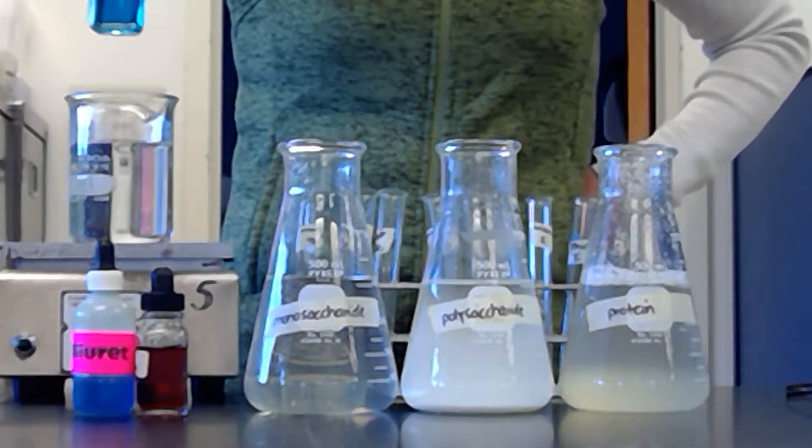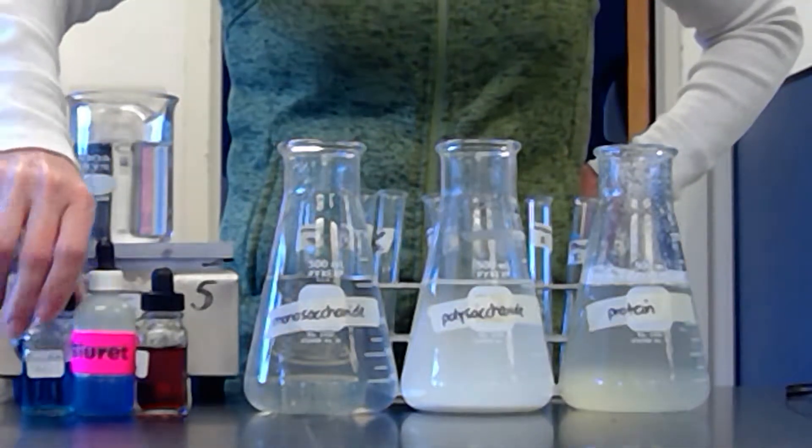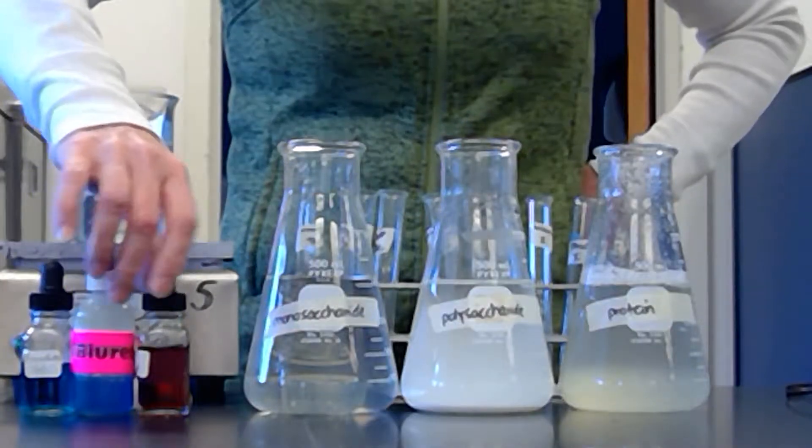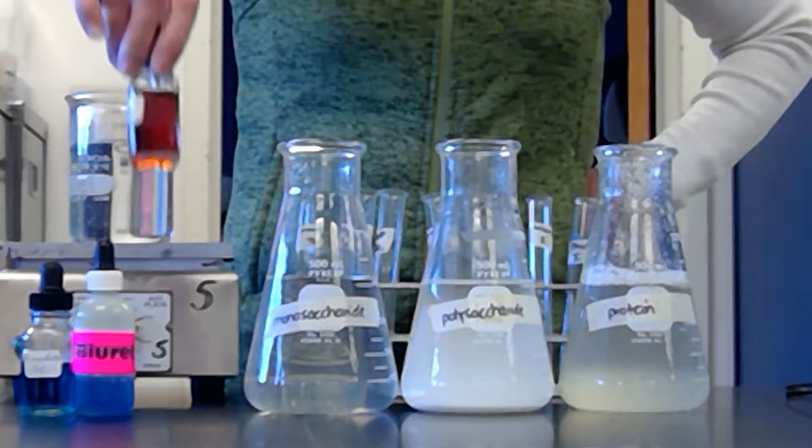If you see the color, it's sort of aqua to begin with. And then this is called biuret. It's kind of a purpley color. And then this is iodine. It's kind of a yellowish brown.